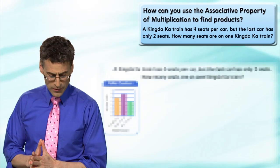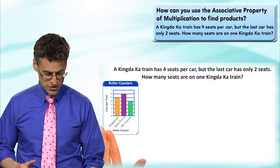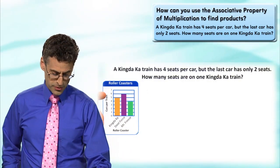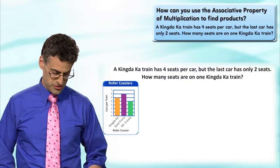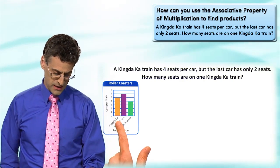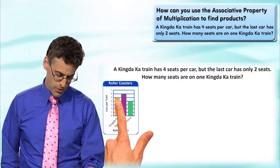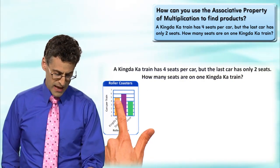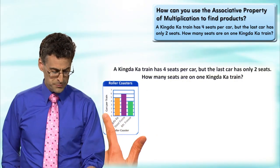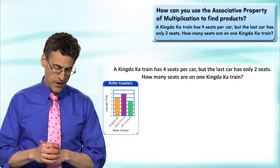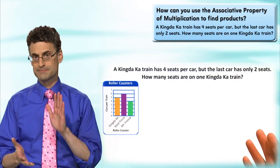Let's take a look at this table which shows the cars per train for different roller coasters. We're looking at the Kingda Ka - if we go up to this end of the bar, we see five, meaning there are five cars per train.